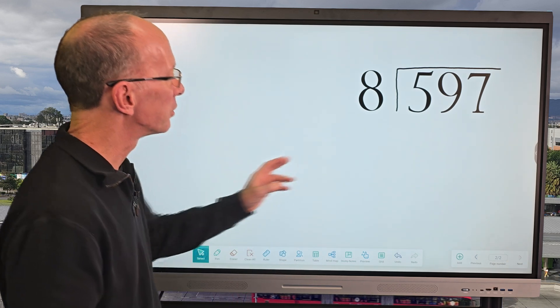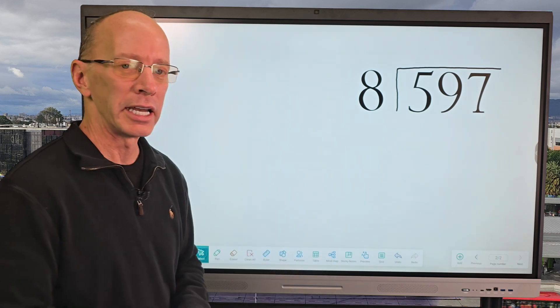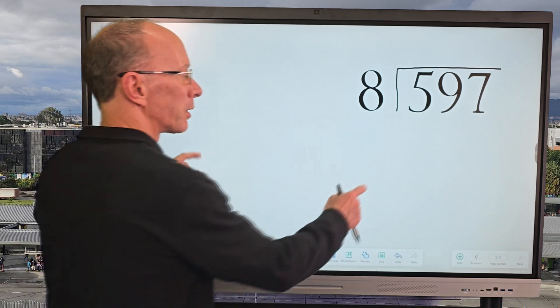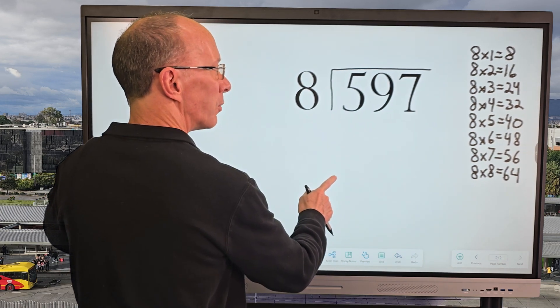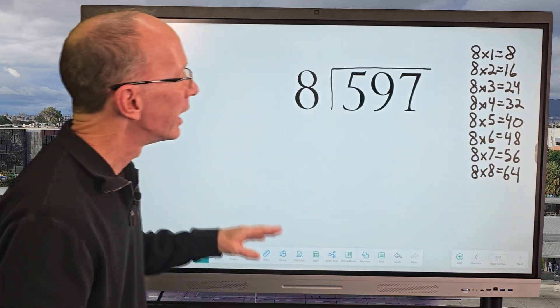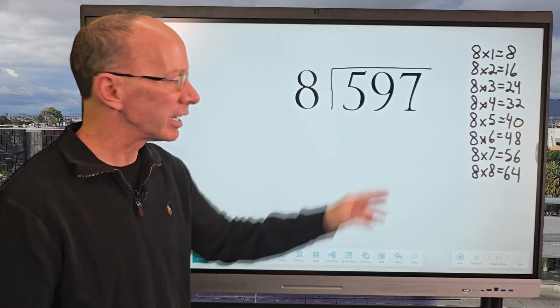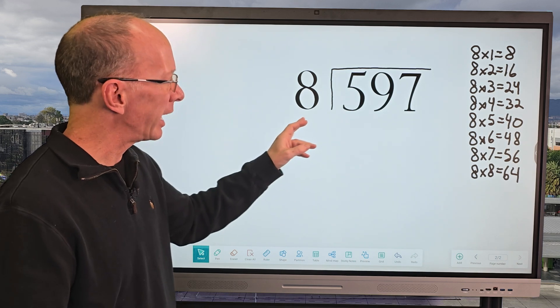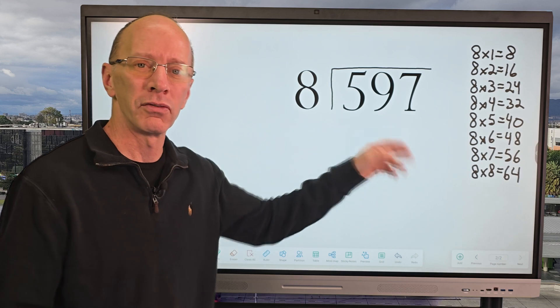So what we got to do is figure out how many times 8 goes into this number. So if you don't know your multiplication, well, I'm going to show you your multiplication facts. I love the smart board. So here, I already wrote down some multiplication facts for you. I got the 8s. We got 8 times 1 is 8, 8 times 2 is 16, and so forth. So I can't put 8 into 5, can I? It's too small, so I need to move over to the next number, 59.